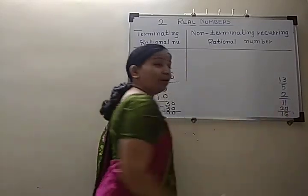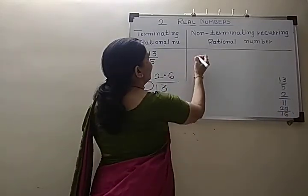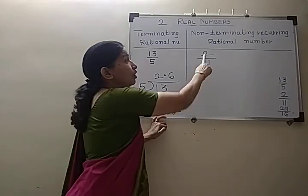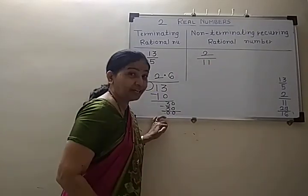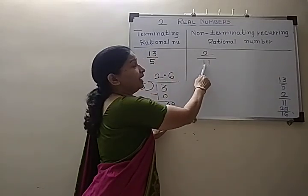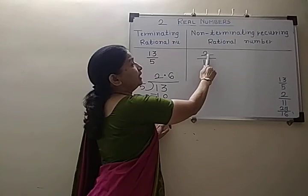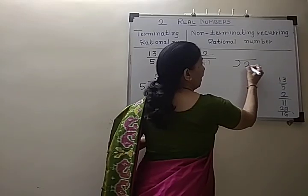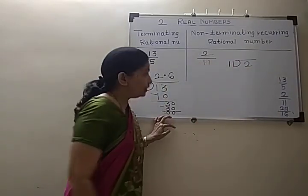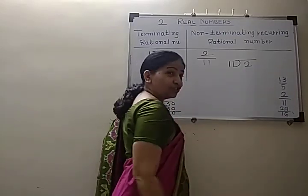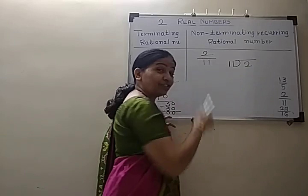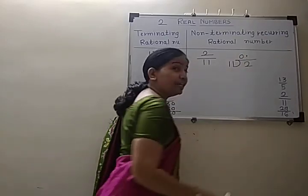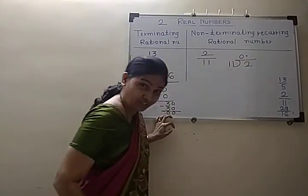Now take the second example: 2 upon 11. For 2 upon 11, the numerator is 2 and the denominator is 11. We will divide this numerator 2 by 11. Since 2 is less than 11, we cannot start dividing directly.